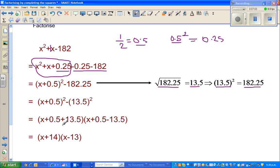Then you do a difference of two squares. (x+0.5+13.5)(x+0.5-13.5), which is (x+14)(x-13).